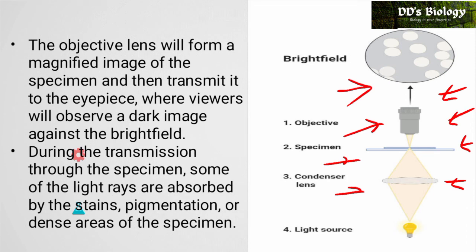During transmission through the specimen, some of the light rays are absorbed — this is differential absorption. Some specimens absorb light and emit a lower amount of light compared to the background, due to stains, pigmentation, or dense areas of the specimen.